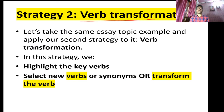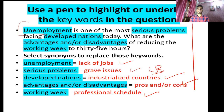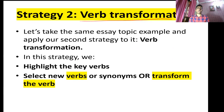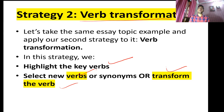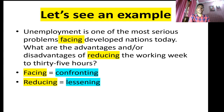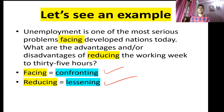The second method is verb transformation. Find the verbs in the question — words like 'increasing,' 'reducing,' 'facing' — these action verbs can have synonyms too. Highlight the keywords and select new verbs or transform them into passive or active form. For 'facing' you can write 'confronting,' and for 'reducing' you can write 'lessening the amounts.' I suggest using the synonym-based method first as it is the most preferable.